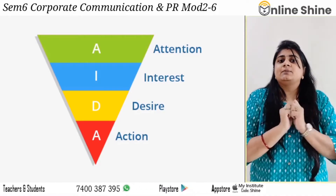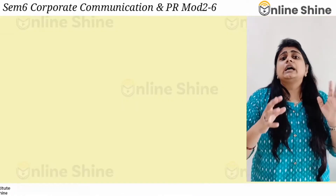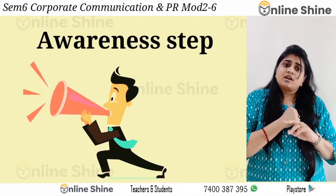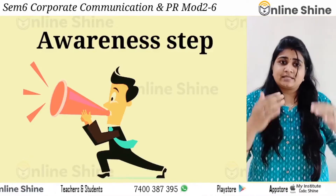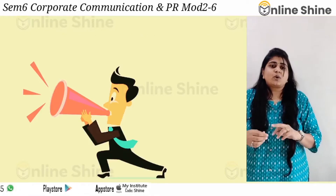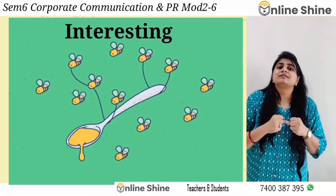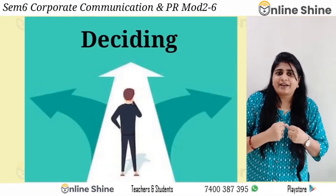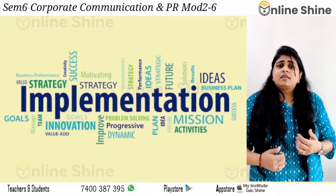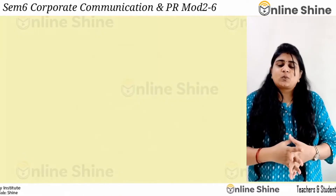Tweaking this a little bit, what Mr. Everett Rogers has said is that these five steps are: Awareness, which is the knowledge aspect; then Understanding or having interest in it; then the third step is the Deciding factor; then the fourth step is Implementation; and the last one is Adoption.